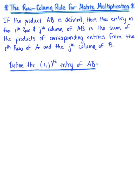What the row-column rule for matrix multiplication is saying is that if the product of matrix A times matrix B is defined, then the entry in the i-th row and j-th column of this product is the sum of the products of the corresponding entries from the i-th row of matrix A and the j-th column of matrix B. Let's define this i-th j-th entry of the new matrix defined by the product of A and B.